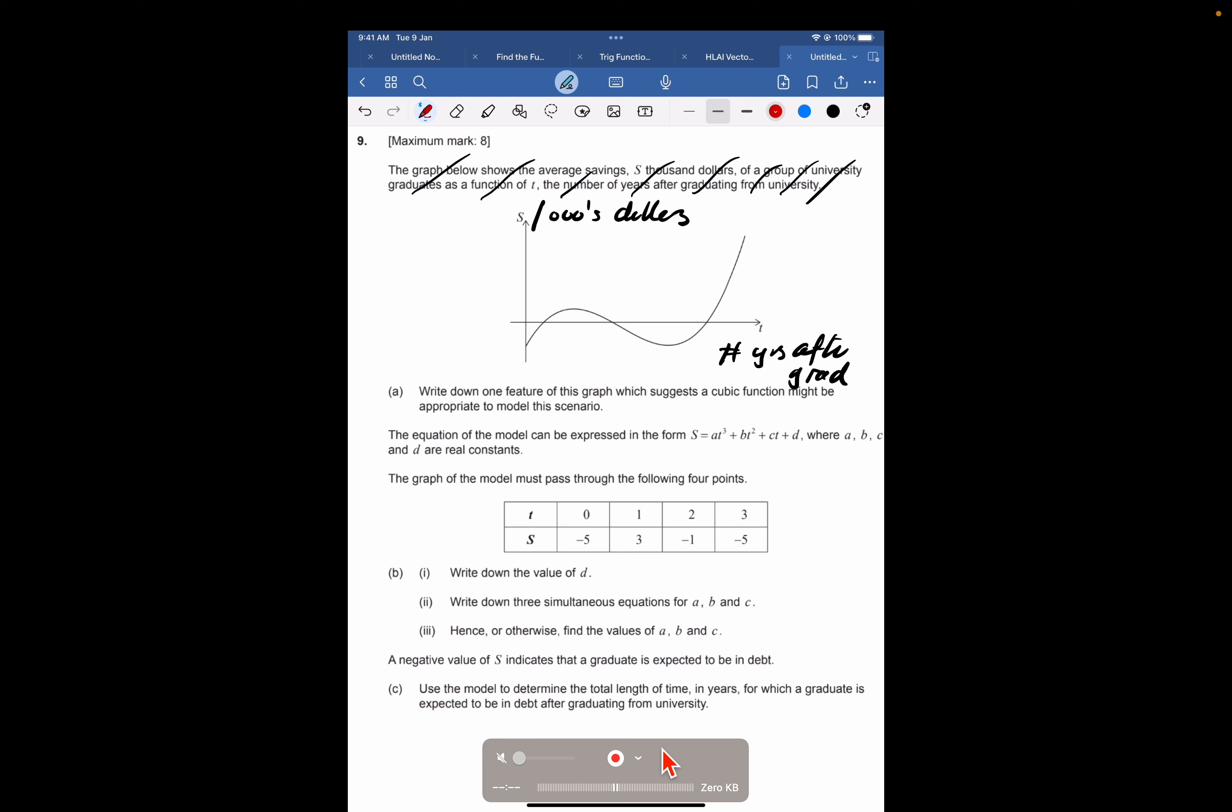Write down one feature of this graph which suggests a cubic function might be appropriate. Well, a quadratic has one turning point. The feature of a cubic is it has two turning points. So basically we say that we have two turning points and therefore a cubic is definitely a good model for it.